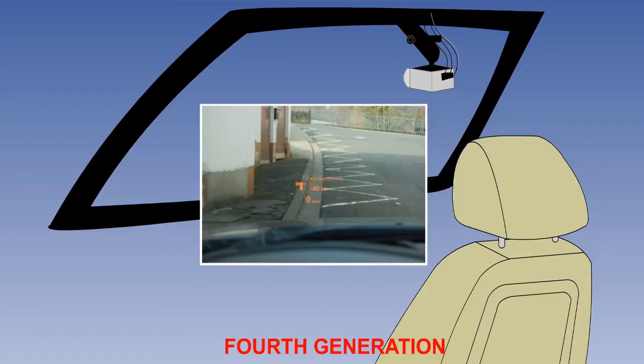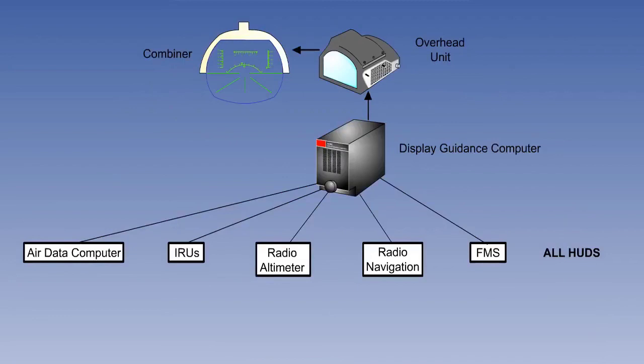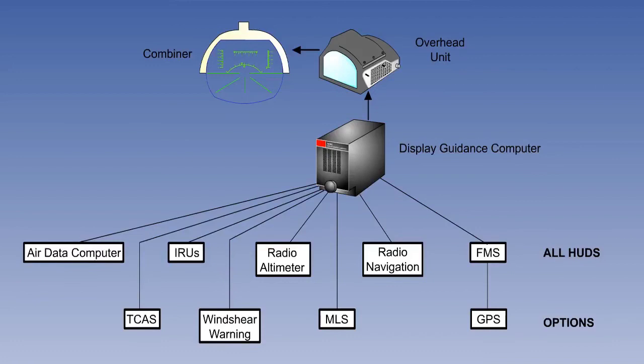Every HUD will show information from the ADC, the IRUs, the radio altimeter, the radio navigation instruments, and the FMS. However, the display guidance computer can also be programmed to show information from TCAS, wind shear warning, MLS, and GPS, if required.